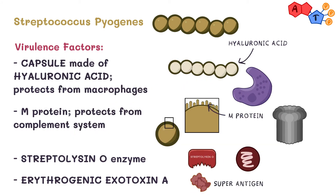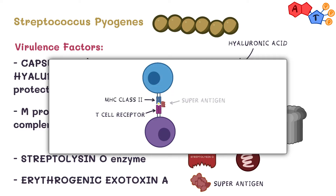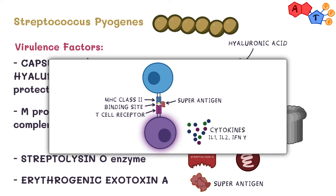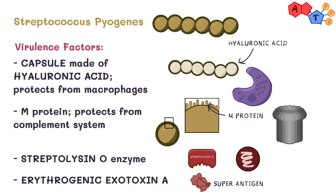The second toxin is erythrogenic exotoxin A. This is a superantigen — it can cross-link the T cell receptor to MHC2 apart from the normal binding site. This leads to constant activation of T cells and a storm of inflammatory cytokine release, such as IL-1, IL-2, and interferon gamma. This can cause toxic shock-like syndrome and scarlet fever. Note that erythrogenic exotoxin A is similar to toxic shock syndrome toxin produced by Staph aureus, and can similarly lead to toxic shock syndrome.